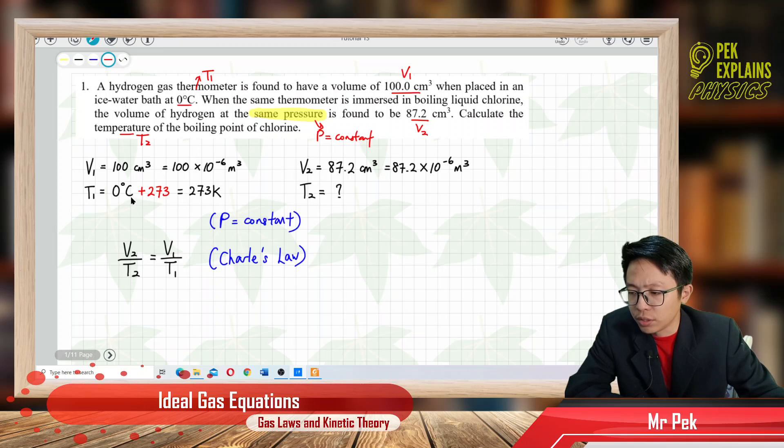To change to Kelvin, plus 273, so you get Kelvin. Now you want to find T₂, provided the pressure is constant. This is actually using Charles's Law. Pressure constant, so pressure is not in the equation; we only have volume and temperature.